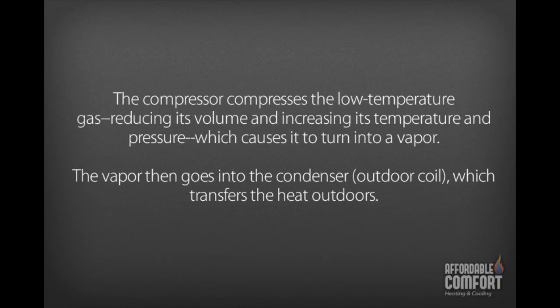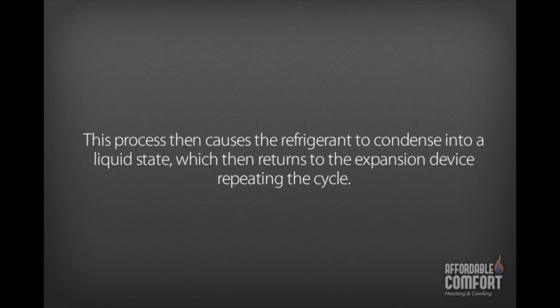The compressor compresses the low-temperature gas, reducing its volume and increasing its temperature and pressure, which causes it to turn into a vapor. The vapor then goes into the condenser, the outside coil, which transfers the heat outdoors. This process then causes the refrigerant to condense into a liquid state, which then returns to the expansion device, repeating the cycle.